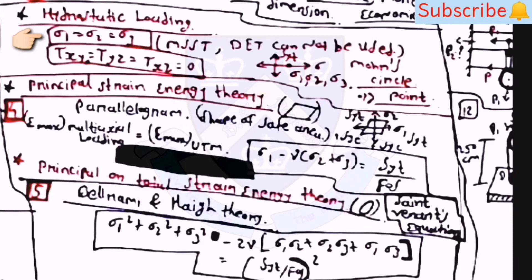For hydrostatic loading: sigma_1 = sigma_2 = sigma_3 and tau_xy = tau_yz = tau_xz = 0. For this type of loading, MSST and DET cannot be used, and the Mohr's circle reduces to a single point for hydrostatic loading.